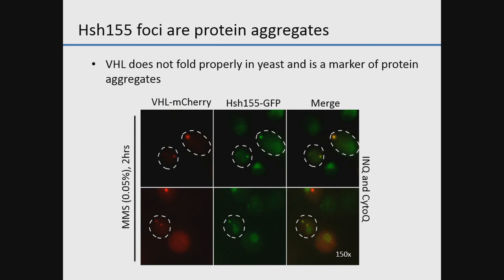One way she demonstrated this was by colocalizing HSH-155 with a protein called VHL. VHL is a human protein that can't fold properly in yeast, and when overexpressed at high temperature it serves as a marker for protein aggregates. VHL and HSH-155 co-localized both at peripheral nuclear sites and cytoplasmic sites, suggesting we're looking at protein aggregates.